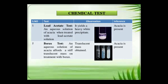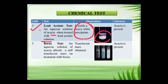Now we come to the experimental part — the chemical tests. First, we perform the lead acetate test. In this test, an aqueous solution of acacia when treated with lead acetate solution yields a heavy white precipitate. If it looks like this, we draw the inference that acacia is present in the solution.